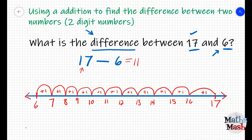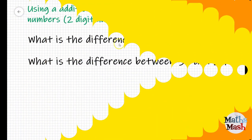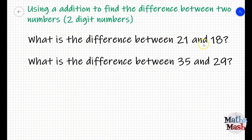Using this frog hops method we've just done, pause the video and try working out these two questions for practice. First one is, what is the difference between 21 and 18? And the second question is, what is the difference between 35 and 29? Now, pause the video and restart the video when you're ready to check your work.